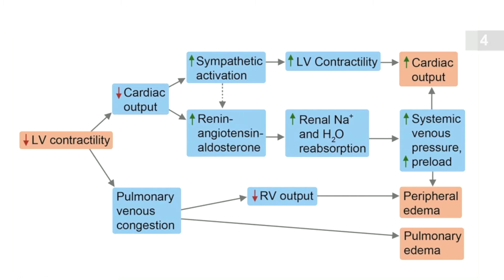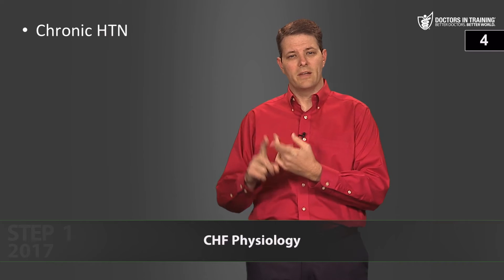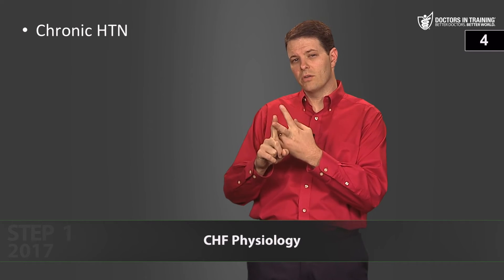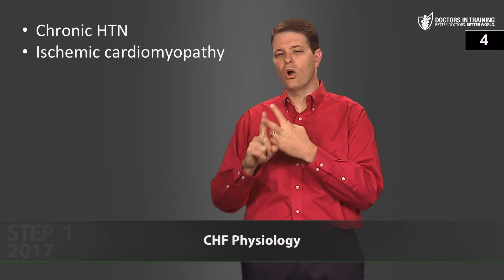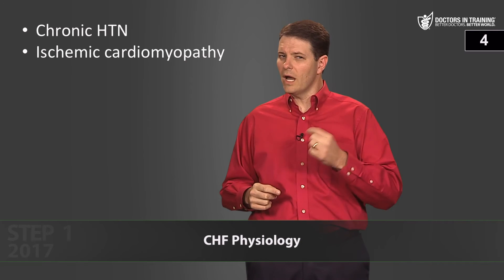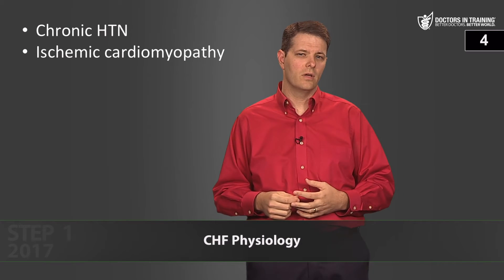Looking at the physiology diagram, it starts on the far left with decreased left ventricular contractility — pump failure. The two most common causes are chronic hypertension and ischemic heart disease including myocardial infarction. Chronic hypertension leads to left ventricular hypertrophy because the left ventricle has to work harder against increased blood pressure, and LVH eventually progresses to heart failure.